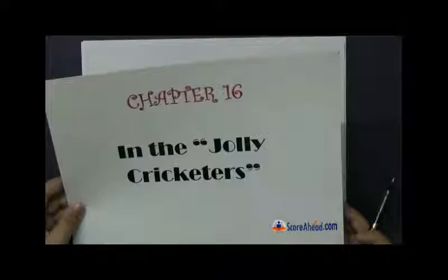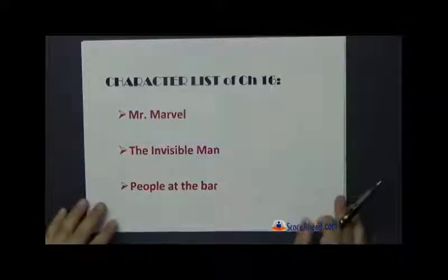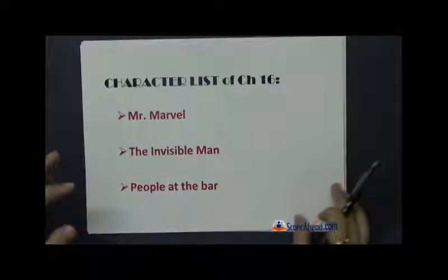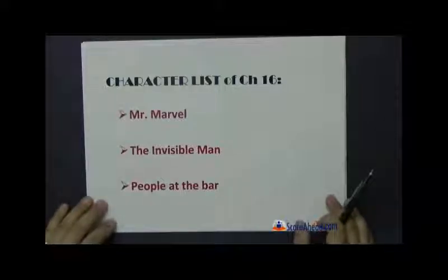Jolly Cricketers is actually an inn, a tavern bar just like the Coach and Horses Inn which we had seen in Iping. And the character list of chapter number 16: